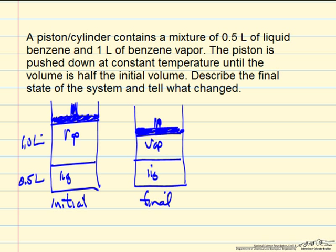And we push down the piston until the volume is half of the initial volume. So that would mean we start out with a volume of 1.5 liters, we must end up with 0.75 liters.